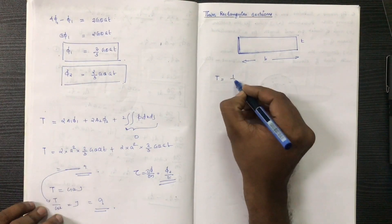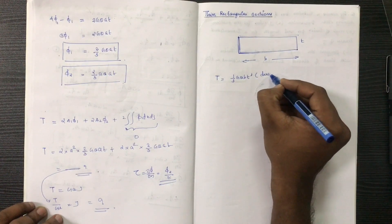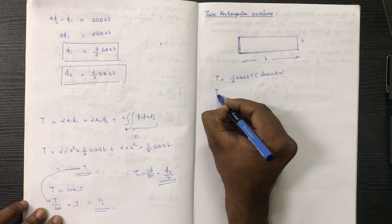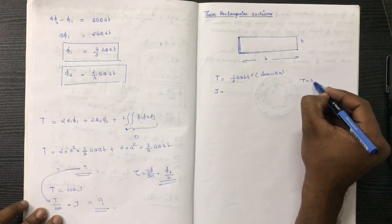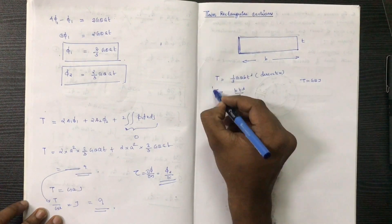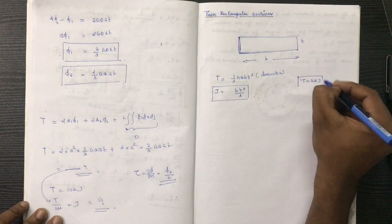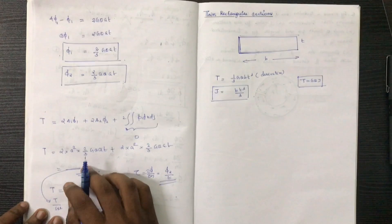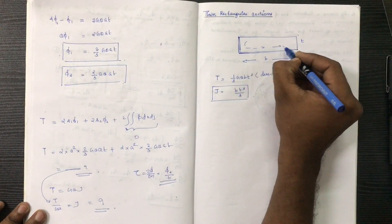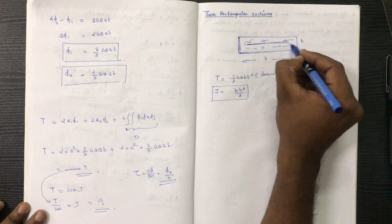Now we can divide the vector into the vector. We have three rectangular sections. Now we have three rectangular sections here.